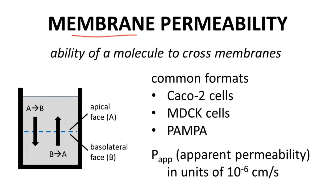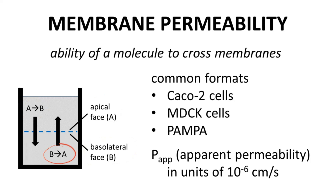Permeability refers to membrane permeability — the ability of a compound to cross biological membranes. Oral drugs must cross membranes in the lining of the GI tract, and drugs that affect a target inside a cell must also cross membranes. Permeability assays monitor how quickly a molecule crosses a cell monolayer, which has two faces: the apical face and the basolateral face. Compound flow can be measured from A to B or B to A.